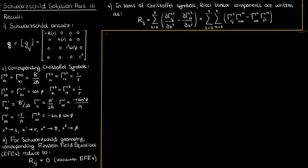Now that we've found our second-kind Christoffel symbols for the Schwarzschild ansatz, let's calculate the Ricci tensor components. If you brute-force your way into calculating all 16 Ricci tensor components, you'll be dealing with an algebraic dumpster fire — but it's a lot simpler than that. The Ricci tensor in this case is also a diagonal tensor, so all the off-diagonal components are identically zero, while the diagonal components are not identically zero but still need to satisfy the vacuum Einstein field equations.